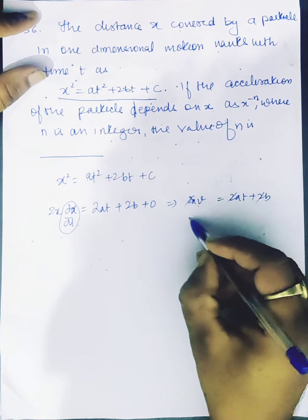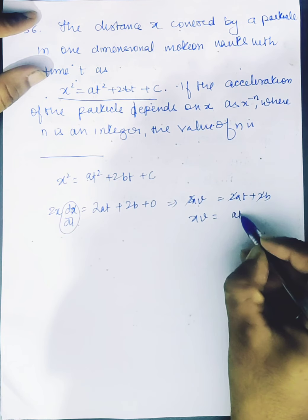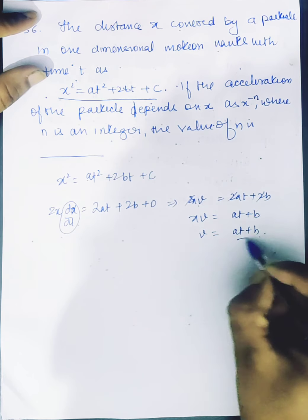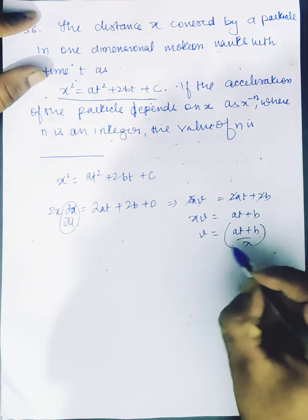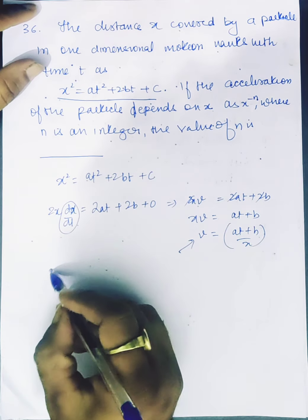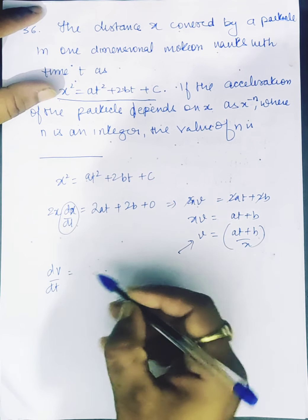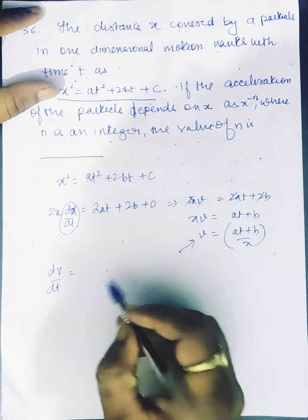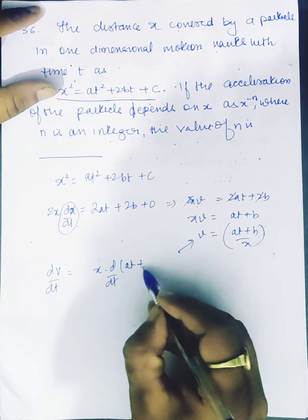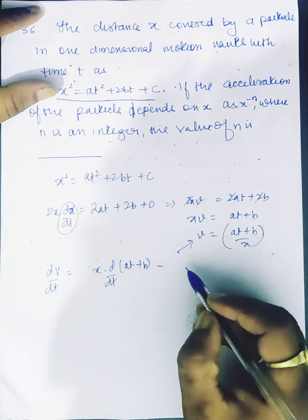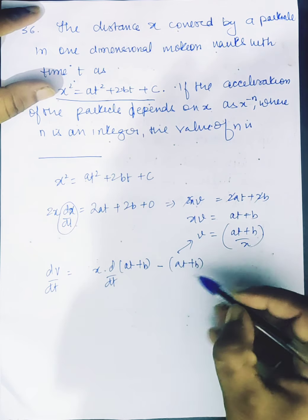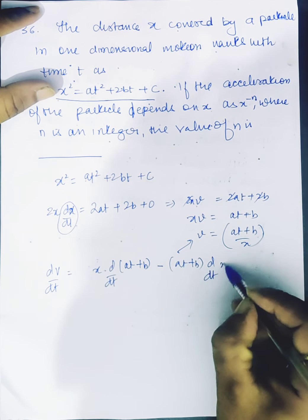Cancelling the 2s, we get x·v equals at plus b, so velocity v equals (at plus b) divided by x. Now we differentiate v with respect to time to get acceleration. Applying the quotient rule: dv/dt equals x times d/dt(at plus b) minus (at plus b) times d/dt(x), all divided by x squared.